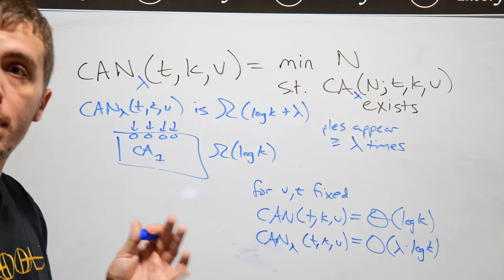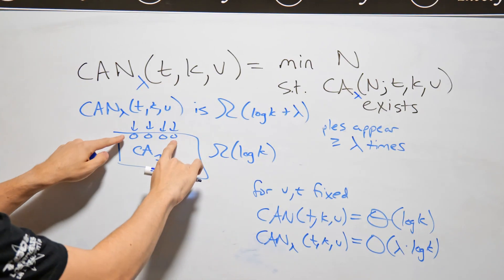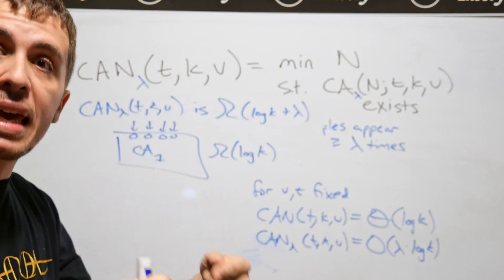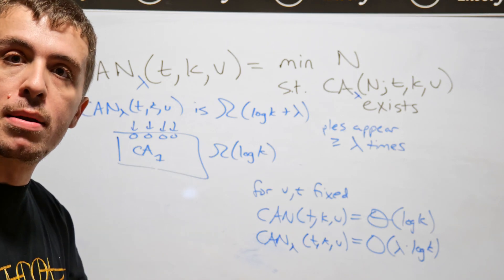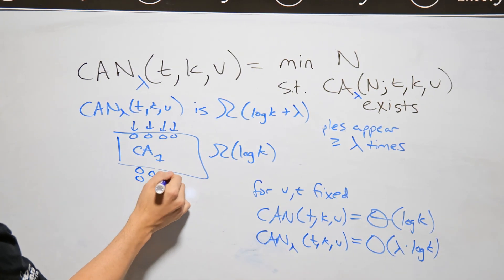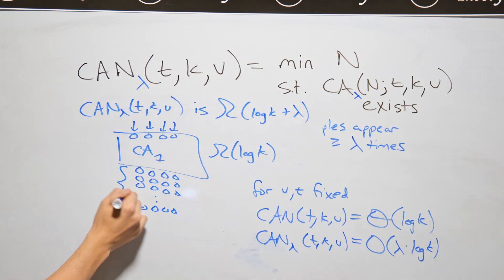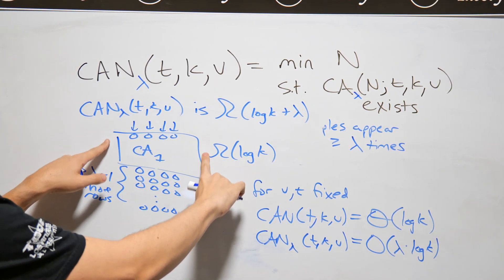In order to be able to complete that, to have everything covered at least lambda times, this interaction must appear again lambda minus one more times. And so therefore, I need at least lambda minus one more rows right here. Right here, I need at least lambda minus one more rows.